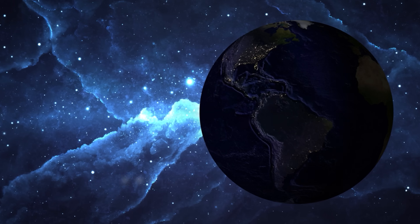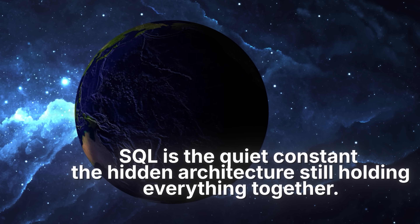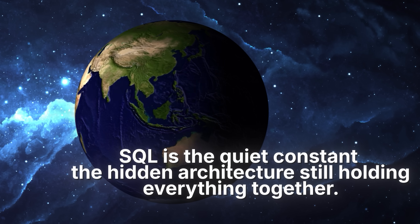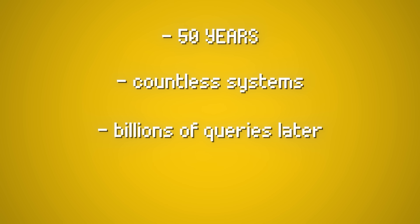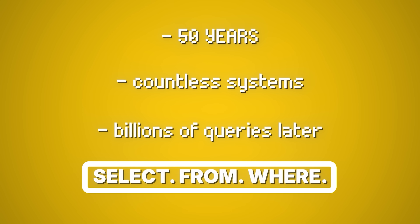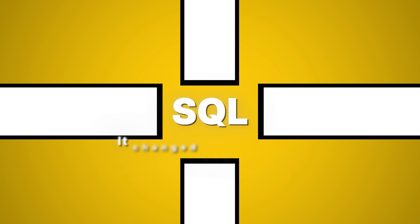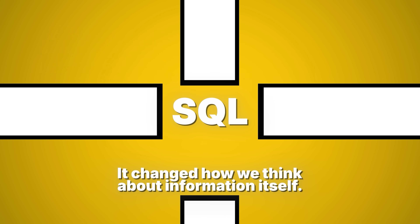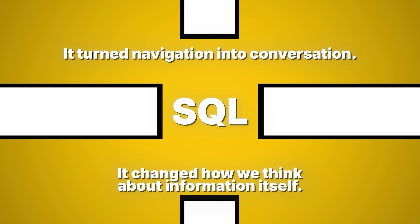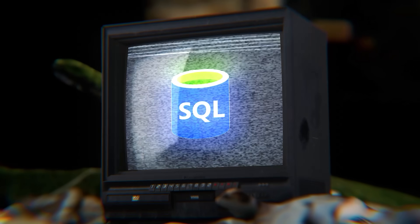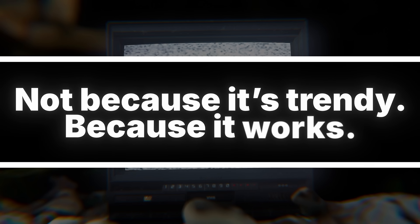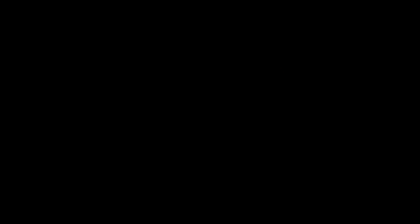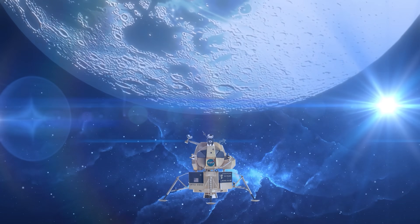In a world obsessed with the new, SQL is the quiet constant — the hidden architecture still holding everything together, not because it's flawless but because it's universal. 50 years, countless systems, billions of queries later, we still say it the same way: select, from, where. SQL didn't just change how we talk to databases, it changed how we think about information itself. It turned navigation into conversation. It made the invisible world of data something humans could ask questions of and get answers back. That's why, half a century later, every developer, every company, every system still speaks in its syntax — not because it's trendy, because it works. SQL isn't just code, it's the quiet voice of order in a noisy universe of data.